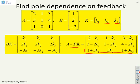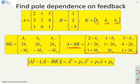I can now find the closed-loop poles by solving the determinant of lambda I minus (A minus BK), and I'll get an expression like this.